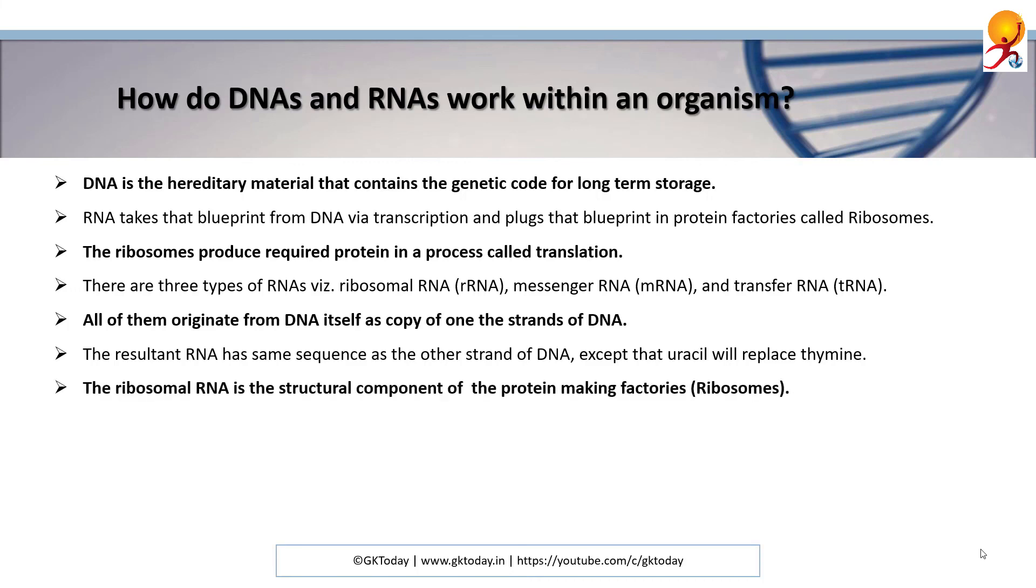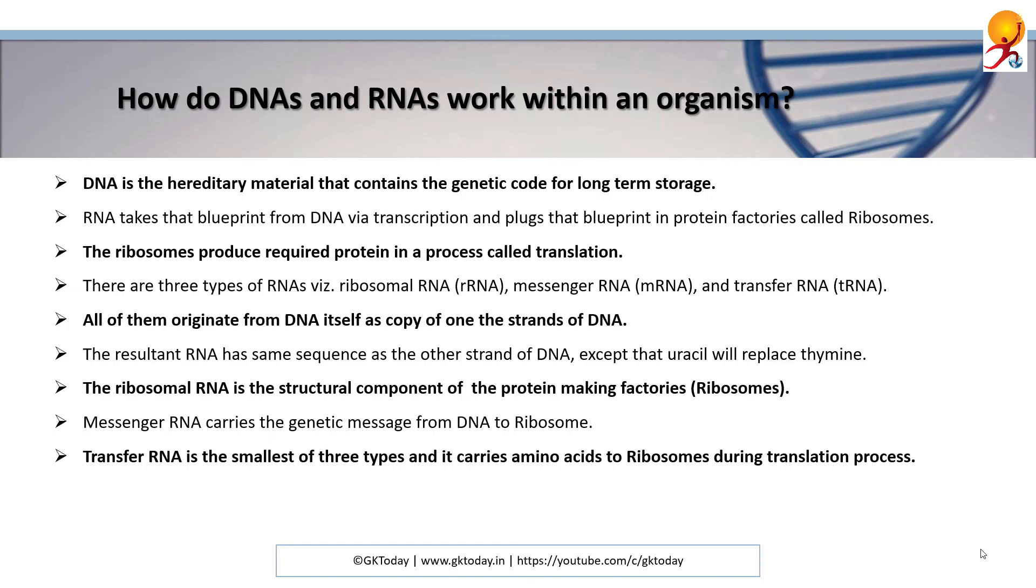The ribosomal RNA is the structural component of the protein-making factories. Messenger RNA carries the genetic message from DNA to ribosome, and transfer RNA is the smallest of the three types and carries amino acids to ribosomes during translation process. The entire process is known as central dogma in biology.